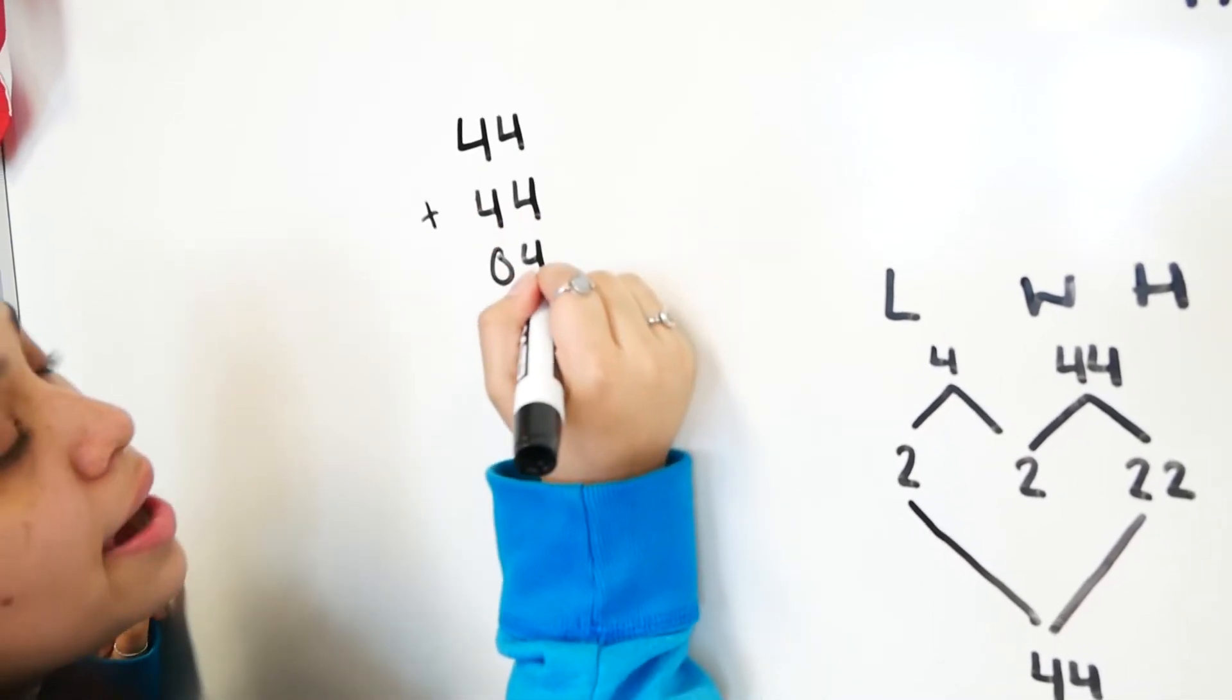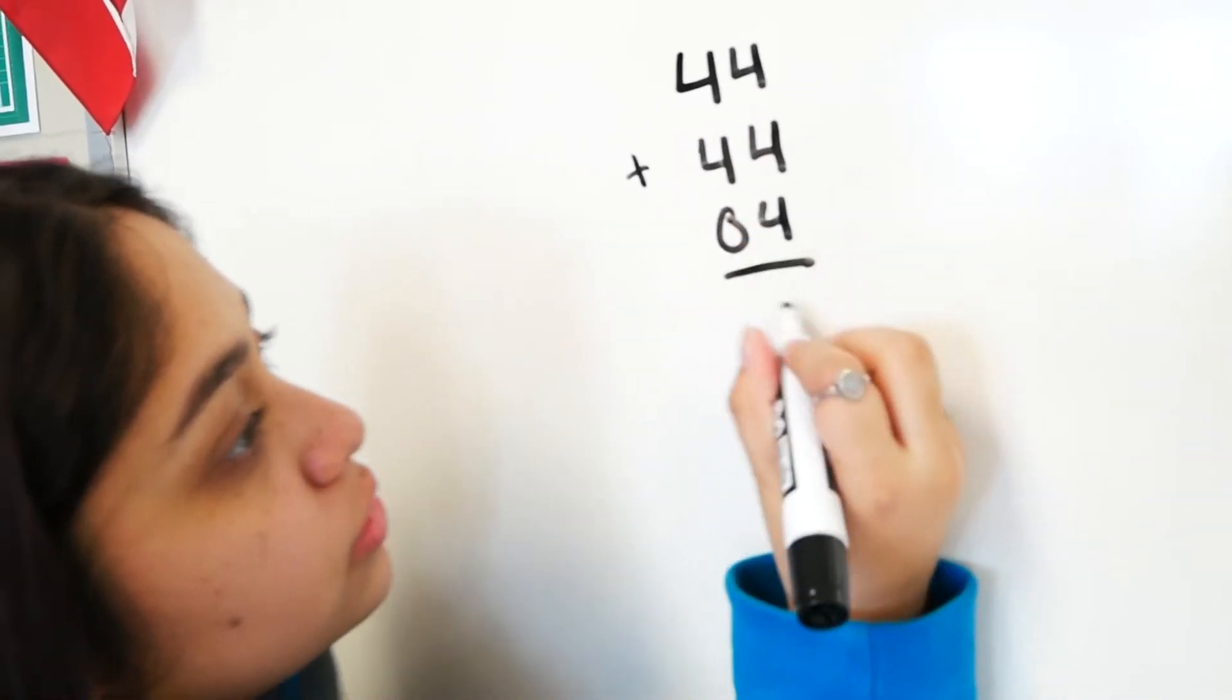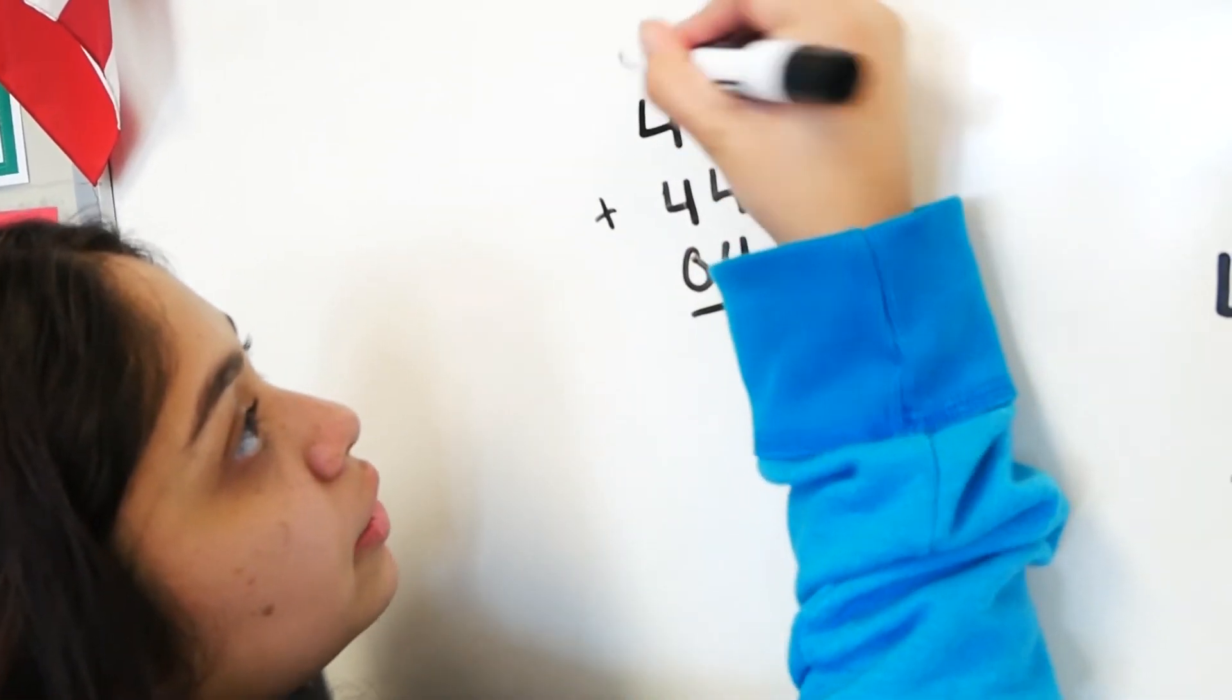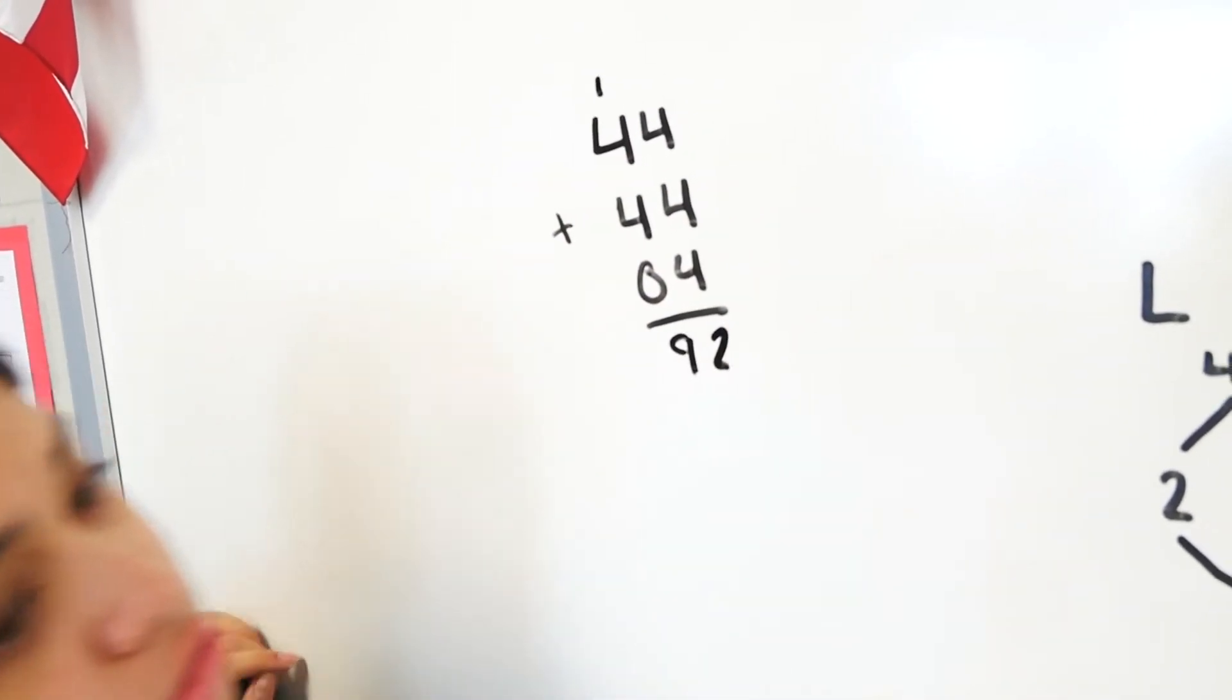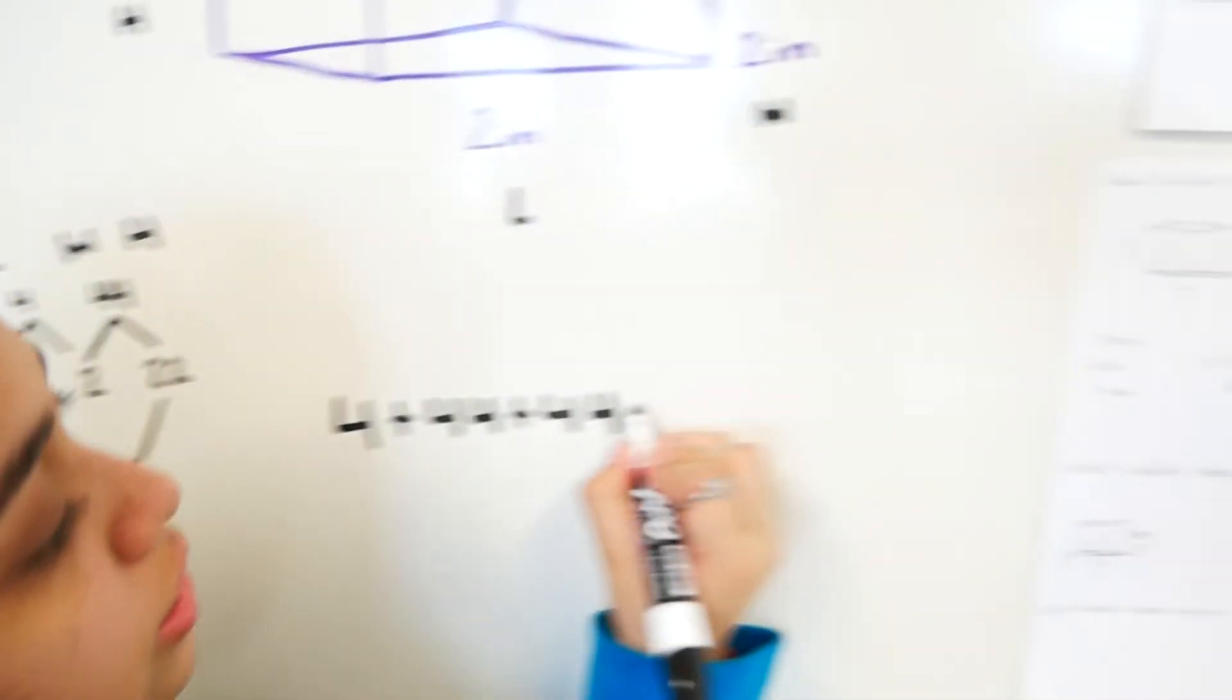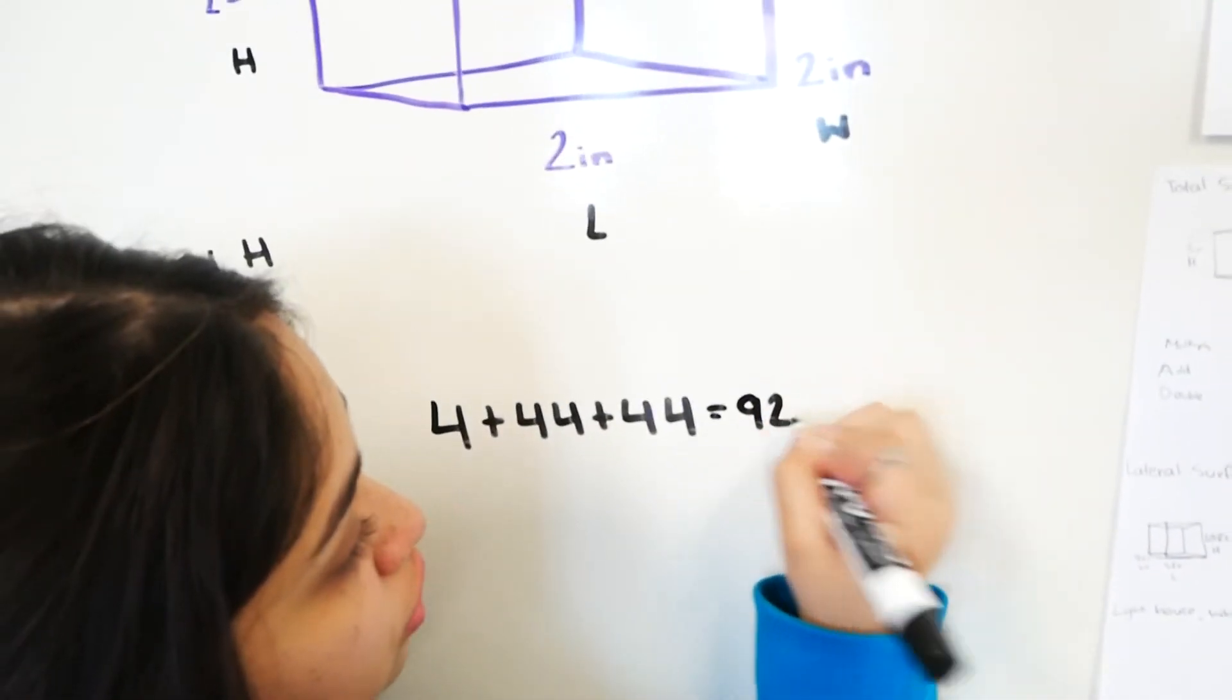4 plus 4 plus 4. 4, 8, 12. 12, carry the 1, 8, 9, 92. Now we're going to come back over here. Equals 92.